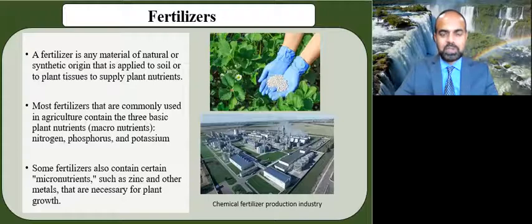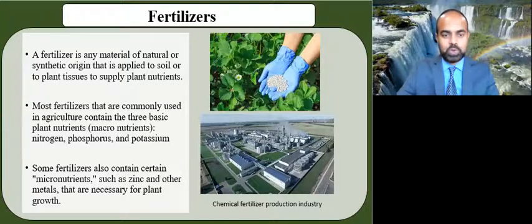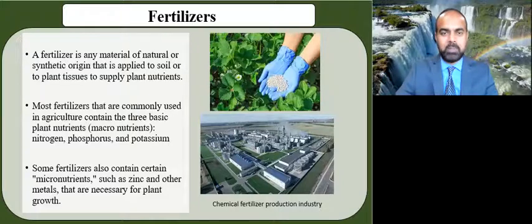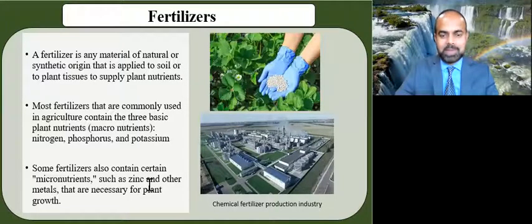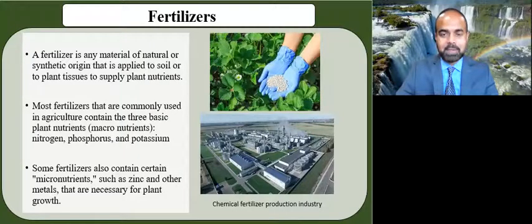Beside these macronutrients, plants also need micronutrients. Many of these micronutrients are critical to plant functioning, such as production of enzymes and many other things. Some of these are zinc, iron, and molybdenum, for example.